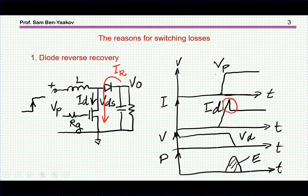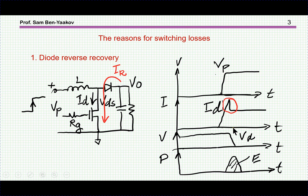During turn-on, we have a more complicated situation in hard-switched PWM converters. The reason is that we start off with the current flowing through the diode. As the transistor is turned on, we have a reverse recovery phenomenon, so there is a large current spike flowing through here. Again, we're going to have an overlap between the drain current and drain voltage, and this product is power loss — the area is the energy loss.